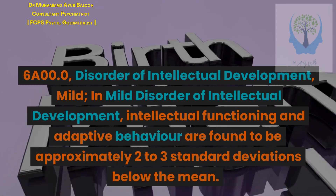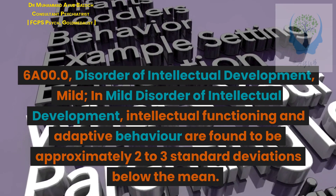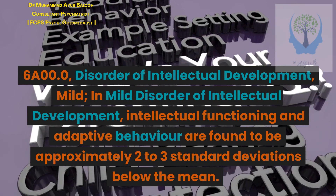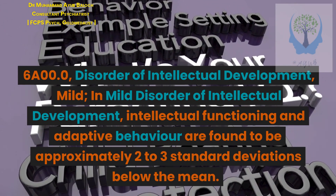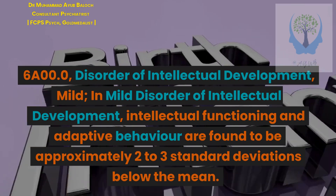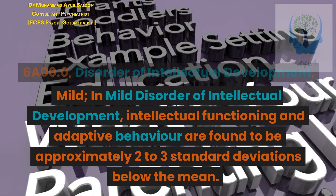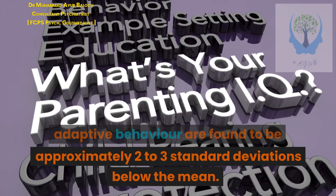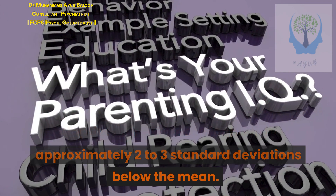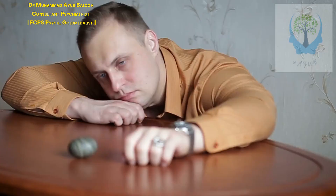6.A.00.0 Disorder of Intellectual Development, Mild. In Mild Disorder of Intellectual Development, intellectual functioning and adaptive behavior are found to be approximately 2 to 3 standard deviations below the mean.